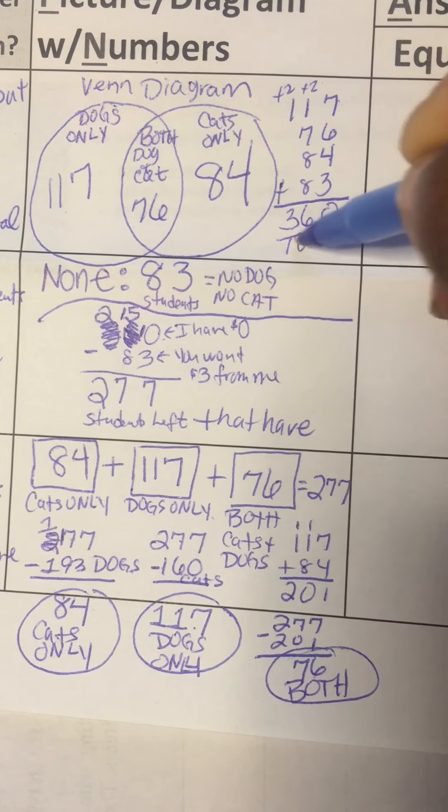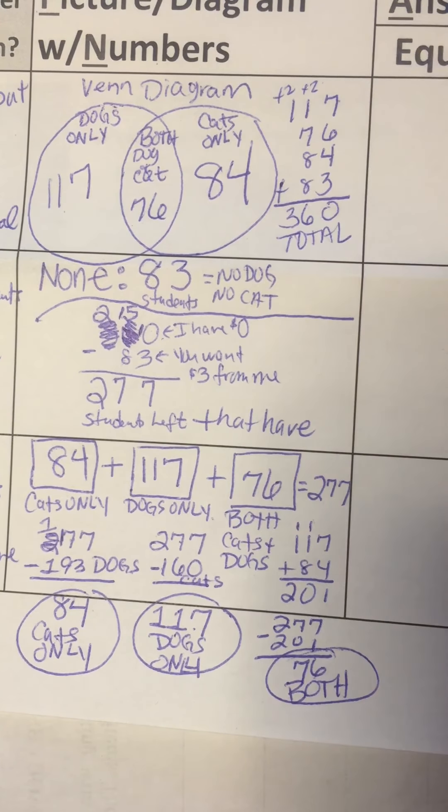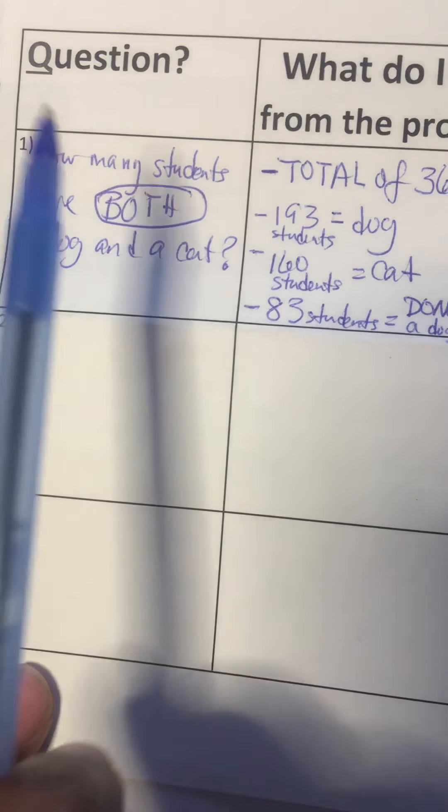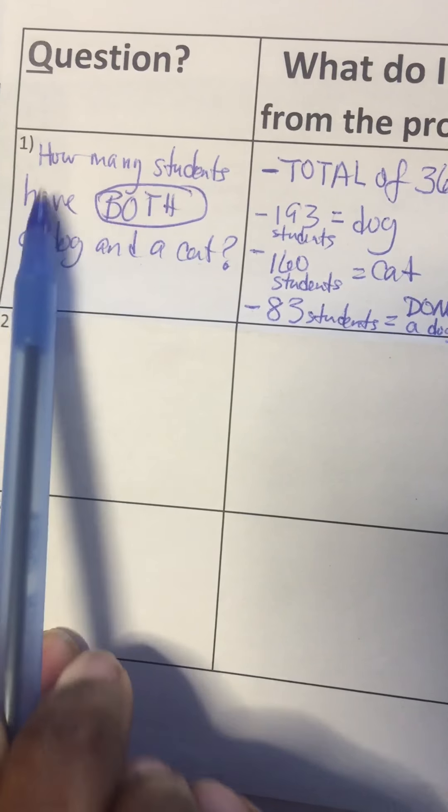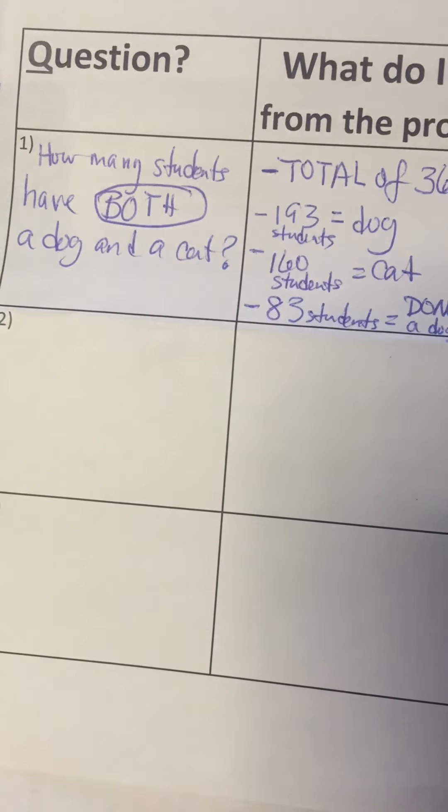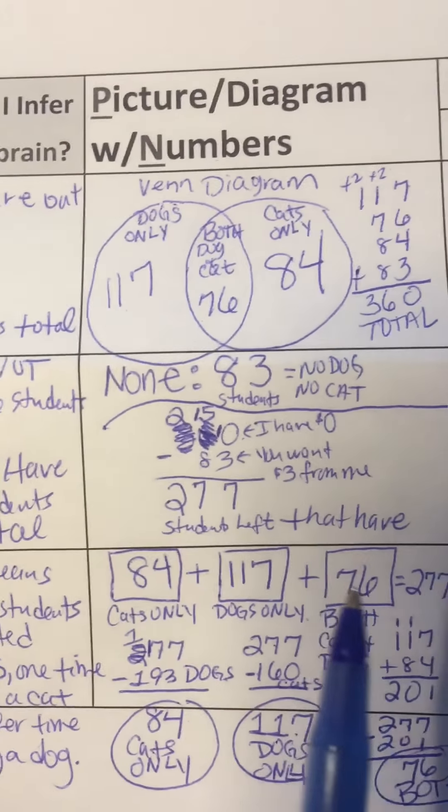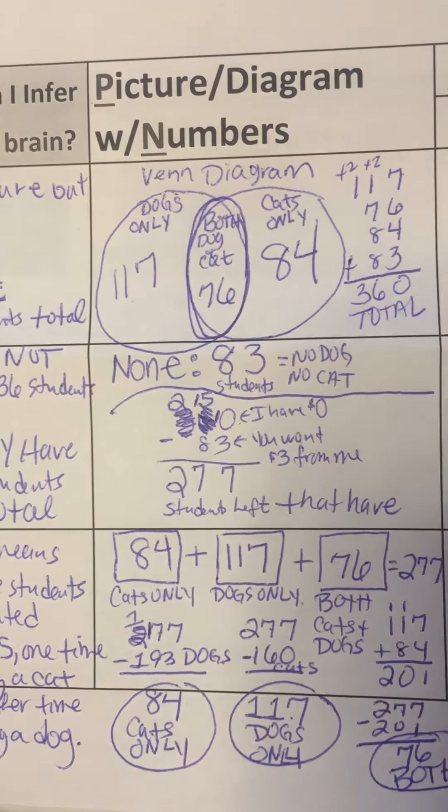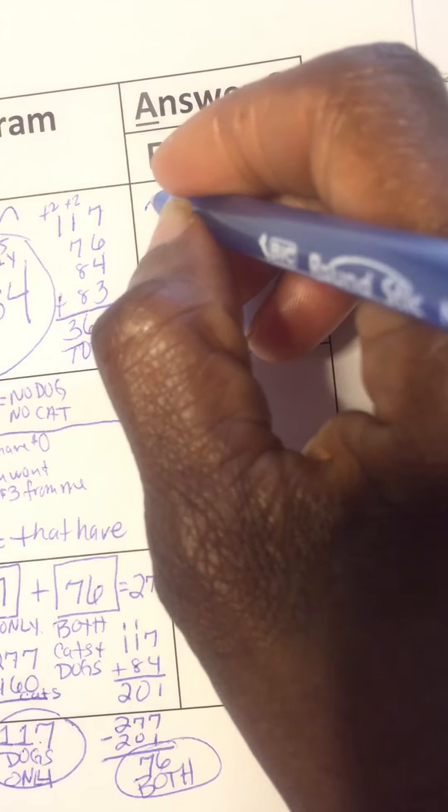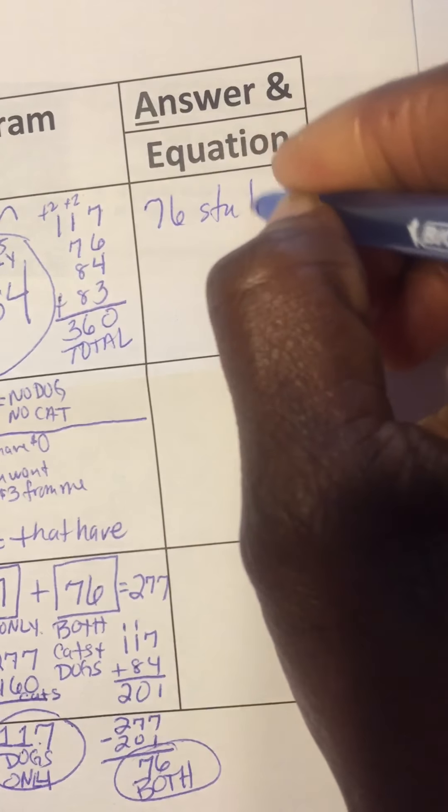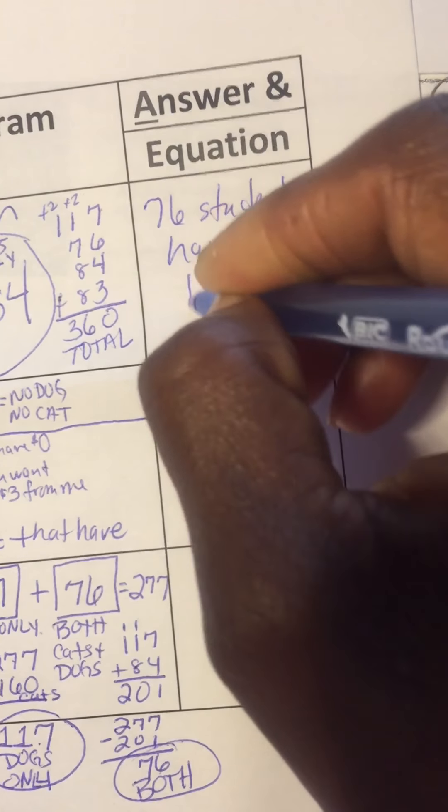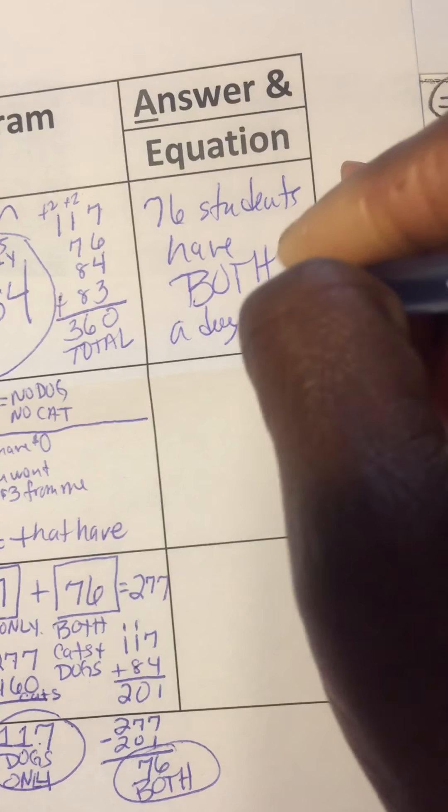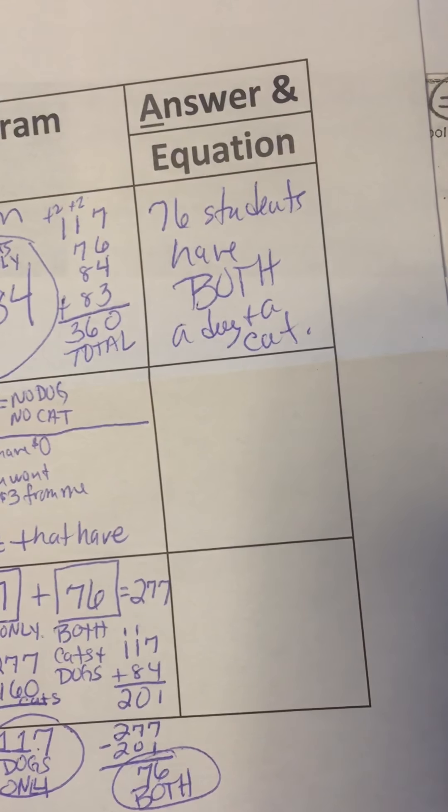So that's 360 total students. So let's go back to the question because there's lots of numbers here, but we can only answer the question. How many students have both a dog and a cat? So of all of these numbers, we only need the middle of the Venn diagram that has both, which is 76 students have both a dog and a cat. And that's it.